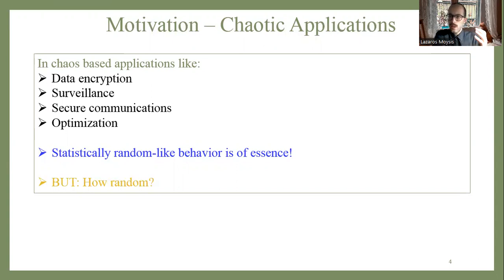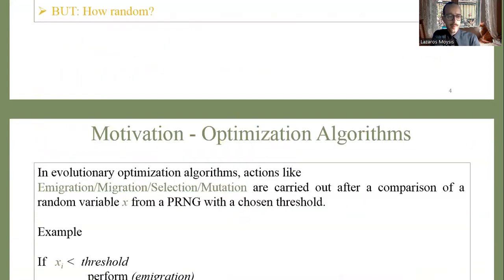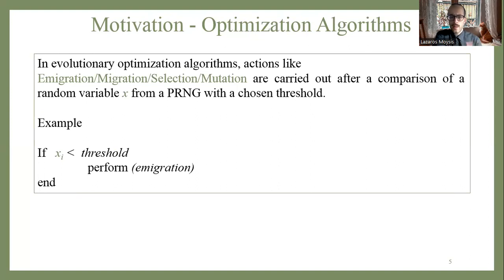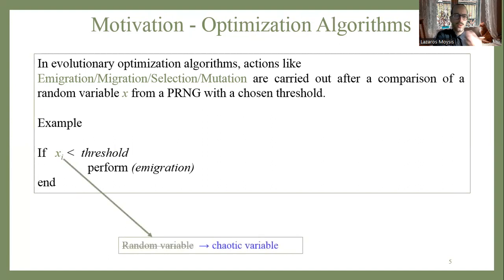In all of these applications, random-like behavior is essential — for example, in data encryption we need a chaotic source that is very random. The question, which sounds silly but isn't, is: how much randomness do we want? In most applications we need very good randomness, but this is not always the case. For example, in evolutionary optimization algorithms there are processes called emigration, migration, selection, and mutation.